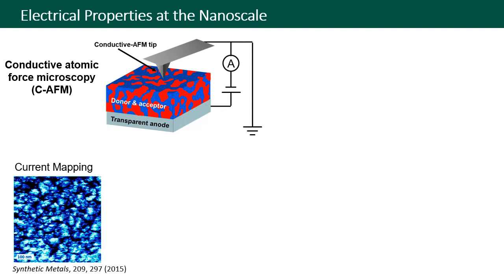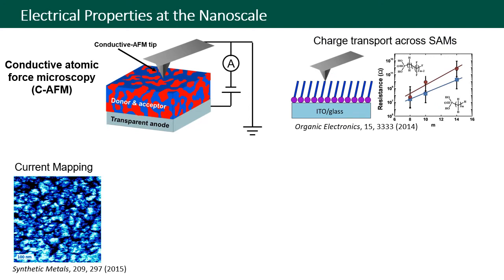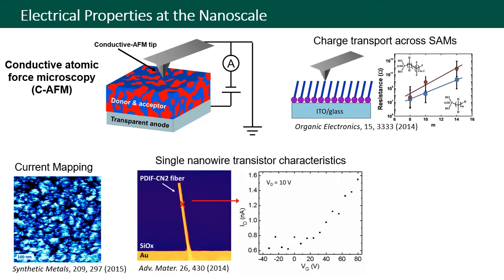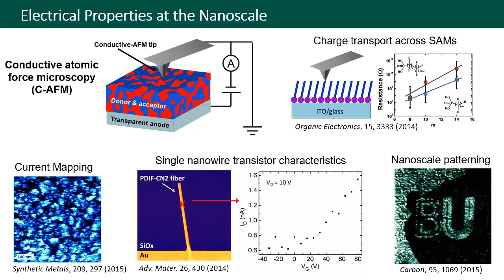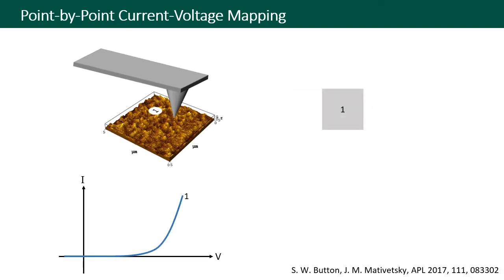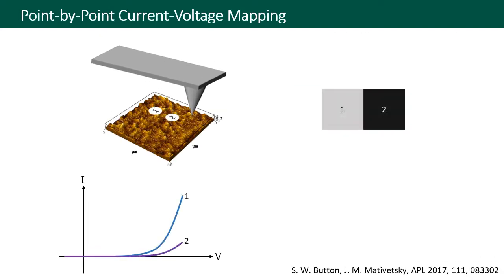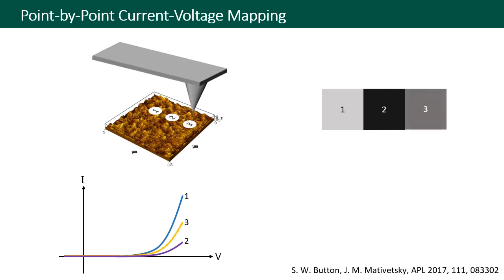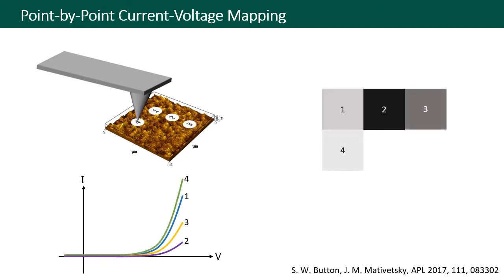We've also used conductive AFM to measure charge tunneling across molecular monolayers, to measure transistor characteristics in single nanowires, and to trigger local reactions to pattern conductive paths in single insulating graphene oxide sheets. For quantitative insight into the local electrical performance of solar cell materials, we've been developing point-by-point current-voltage mapping.